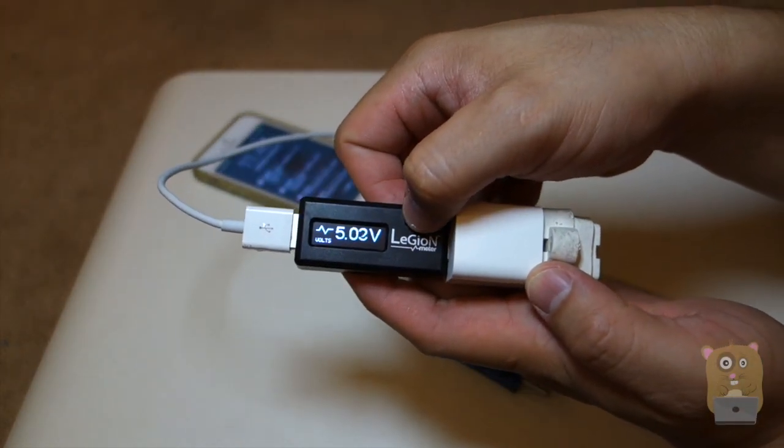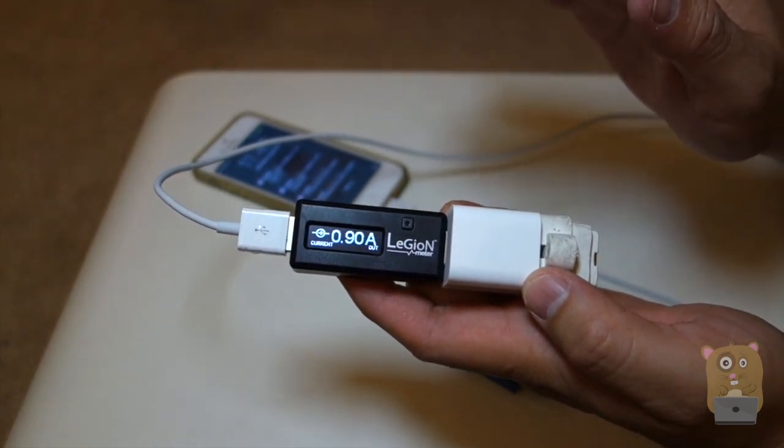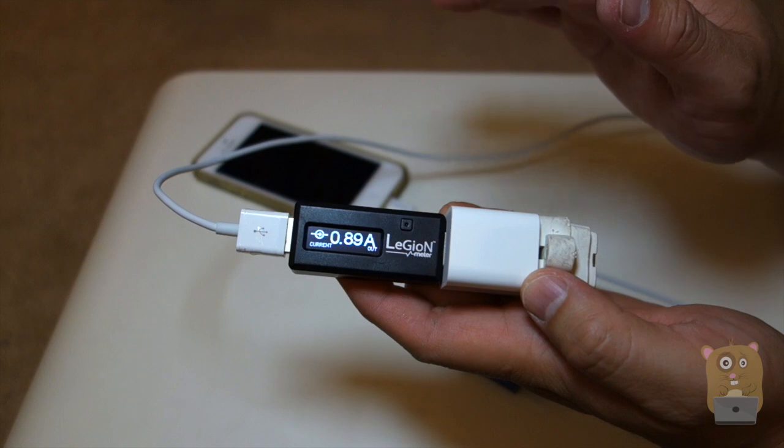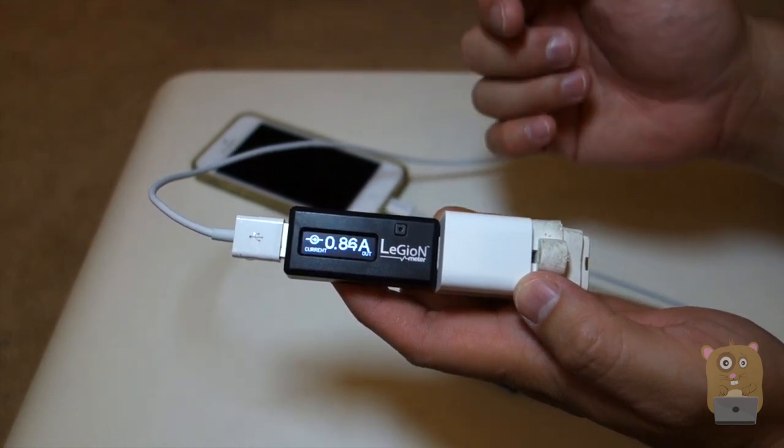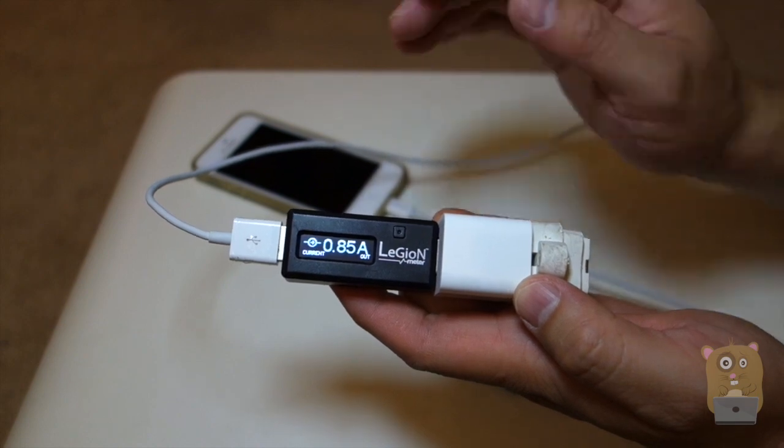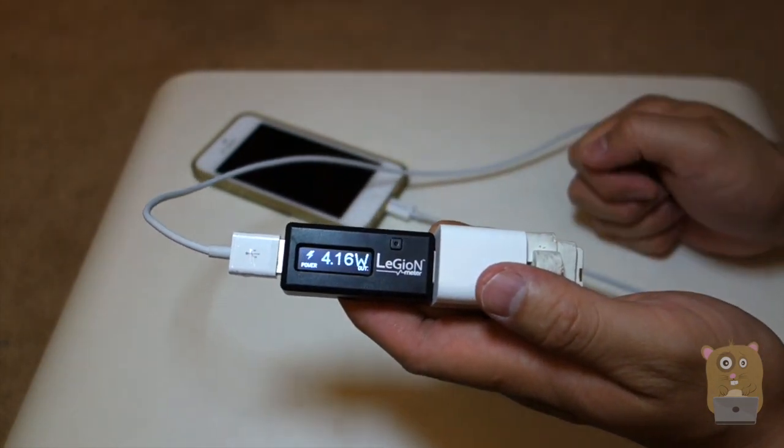So the Legion meter says voltage is about 5. The current fluctuates, it's also about 0.8. It now seems to stabilize at 0.87, 0.86, 0.87. Here's the watts.